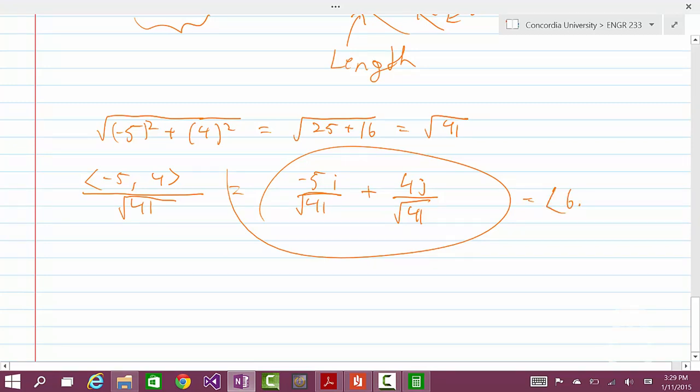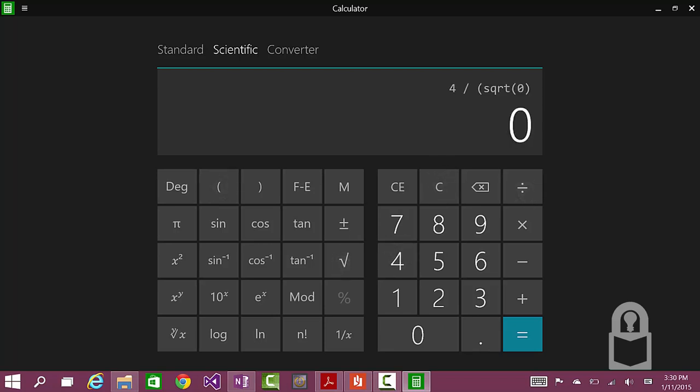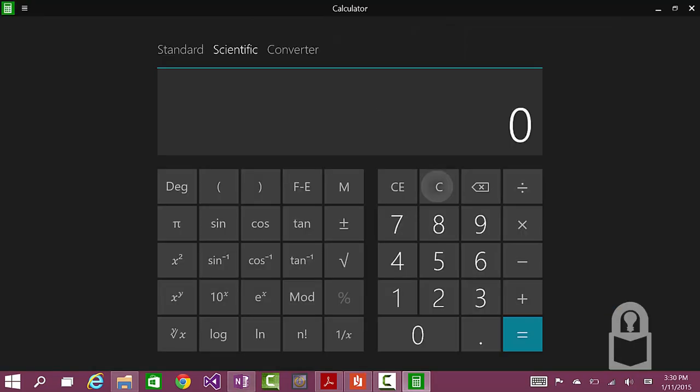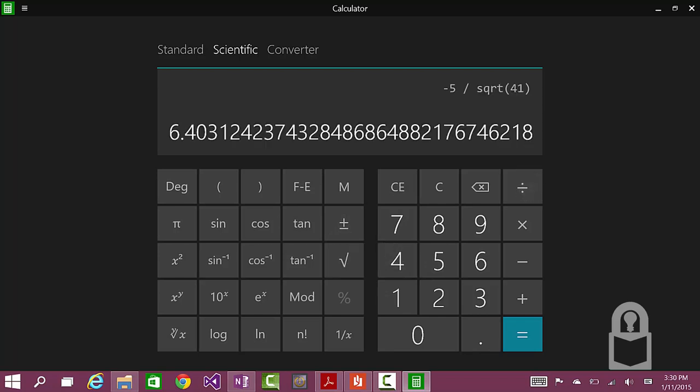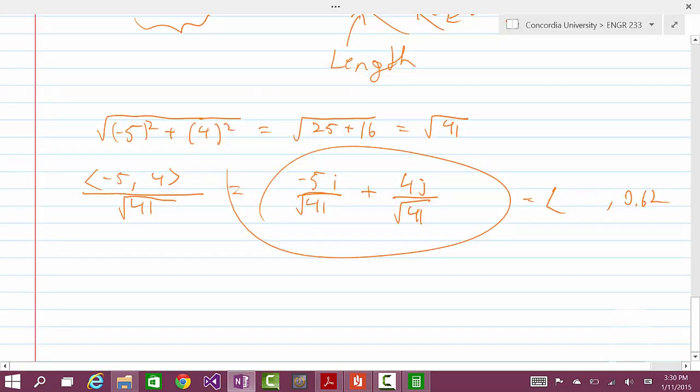And the y component would be 4 divided by square root of 41. That would be 0.62. So this is our unit vector for this vector right there, for this vector. That's our unit vector.